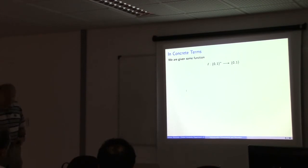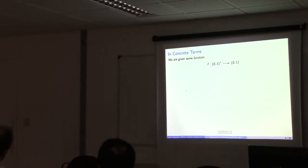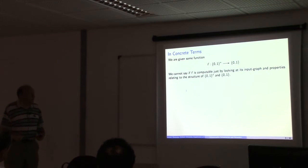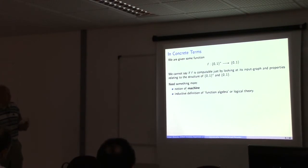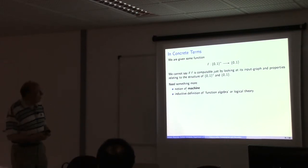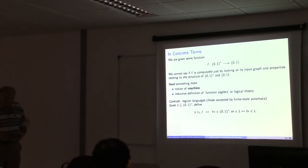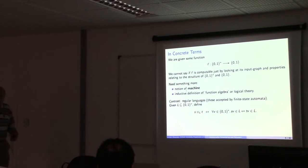To put this concretely: if we think of a function we're computing — given some input binary string, deciding to output 0 or 1 — we can't say whether F is computable just by looking at its input-output graph and properties relating to the structure of its domain. We need something more. We might ask: could we do better? Let me give an example from a much simpler case where we do have a better kind of answer.